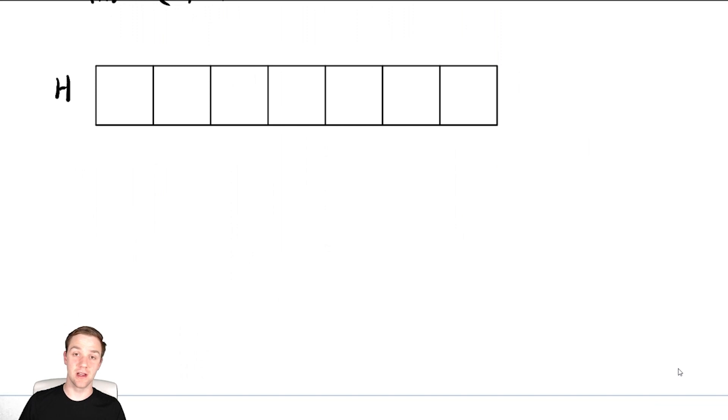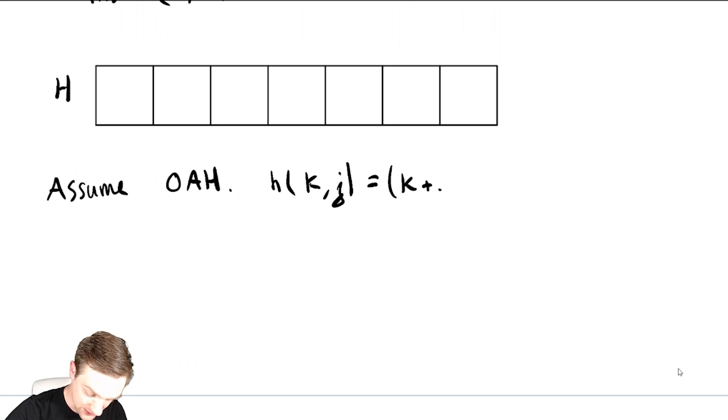In this video, we're going to go over the idea of open address hashing, and we're going to do this by performing some inserts and seeing what happens as we go through this. So let's assume open address hashing. And let's suppose our hash function, it needs two arguments, is something simple, like k plus j mod m. This is what somebody might call simple linear probing, where we're always just going to keep accessing the next location.